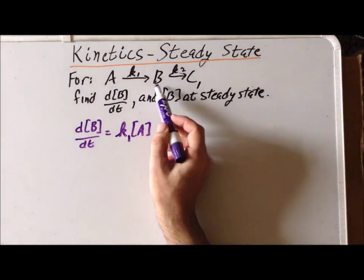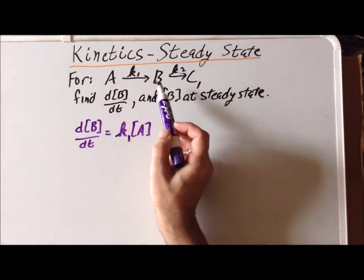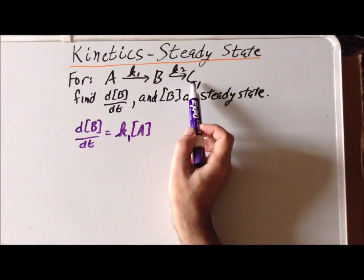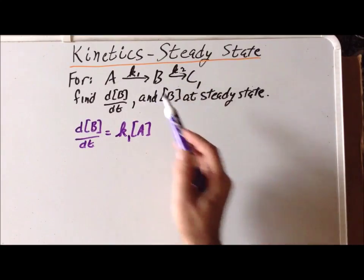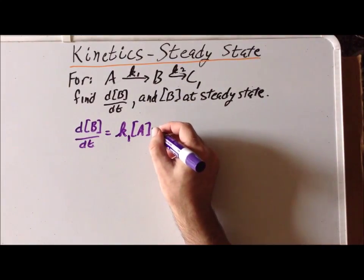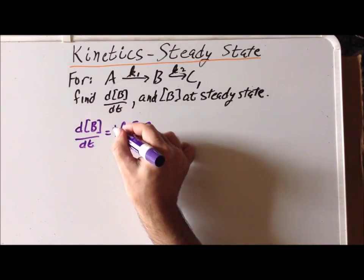But B is also being destroyed as it is converted into C, and that occurs with a rate constant K2 times B. So this is positive here, it's going to emphasize and put a positive sign.